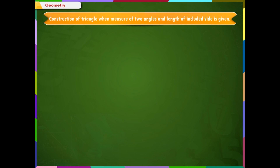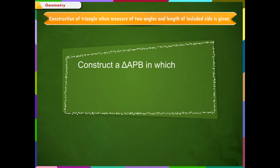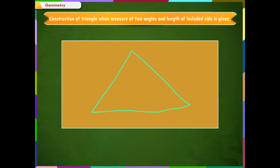Construction of a triangle when the measure of two angles and the length of the included side is given. Construct a triangle APB in which PB is equal to 6 cm, angle P is equal to 60 degrees, and angle Q is equal to 60 degrees. Just as in the previous construction, here also we will draw a rough sketch. Angle P and angle B are the two given angles and PB is the included side. We will always take the included side as the base.